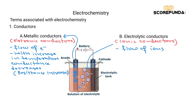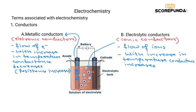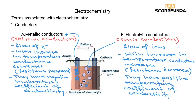However, for electrolytic conductors, with increase in temperature the conductance increases, which means resistance decreases. This is because when temperature increases there is more dissociation of electrolytes, producing more ions, which increases conductance and decreases resistance. So metallic conductors have a negative temperature coefficient of conductivity, or positive temperature coefficient of resistivity. Similarly, electrolytic conductors have a positive temperature coefficient of conductivity and negative temperature coefficient of resistivity.